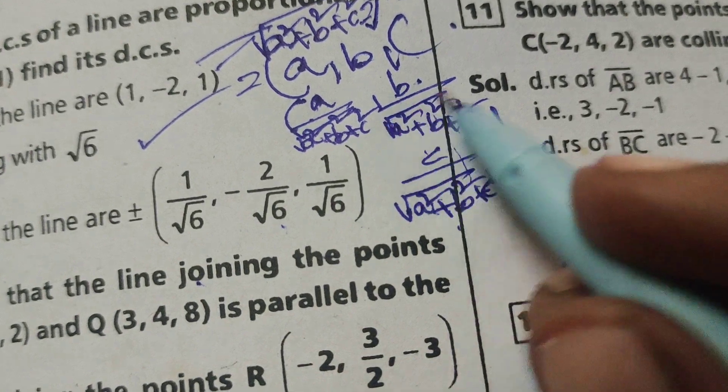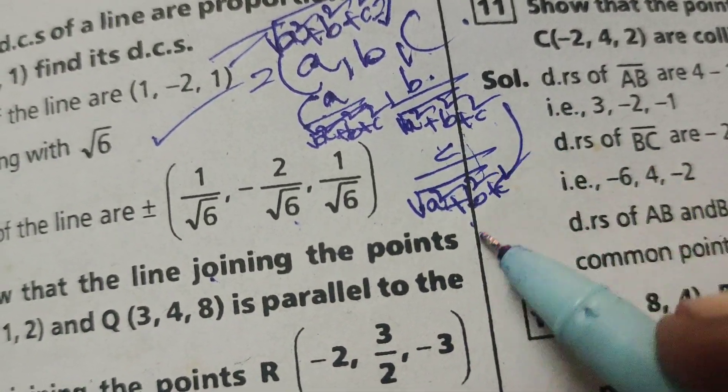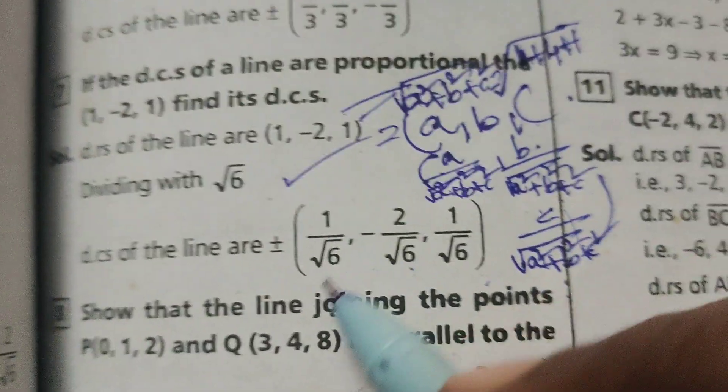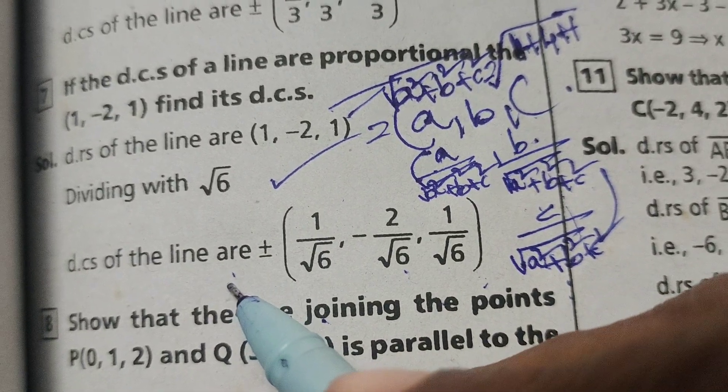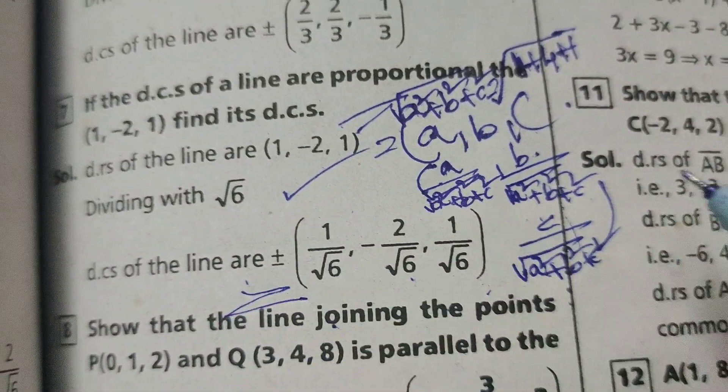root 6. Here root 6 means root of a squared plus b squared plus c squared value. This is all the direction cosines of the line. Okay.